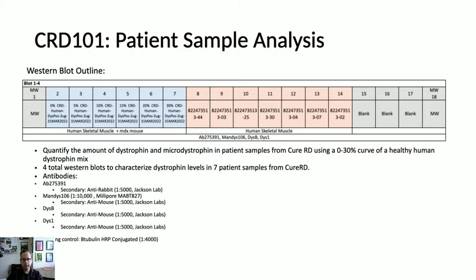Now having a means of showing what normal is, we made a control curve spanning from zero to 30% normal dystrophin, since we expected these patient samples to be pretty low in positivity. We diluted normal human samples with MDX mouse dystrophin-deficient protein, so for instance the 30% sample had 30% normal human tissue and 70% protein from dystrophin-deficient mice. Each of these items provides the control curve for quantification.